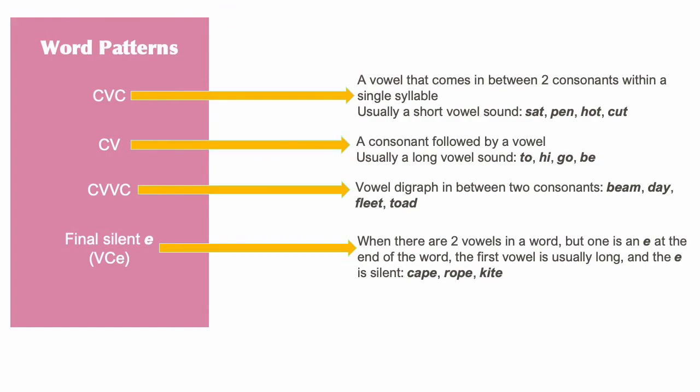Finally for this group is the silent E pattern. When there are two vowels in a word, but one of them is the E at the end of the word, then the first vowel is usually a long vowel sound, and the E at the end of the word is silent, such as the word CAPE.